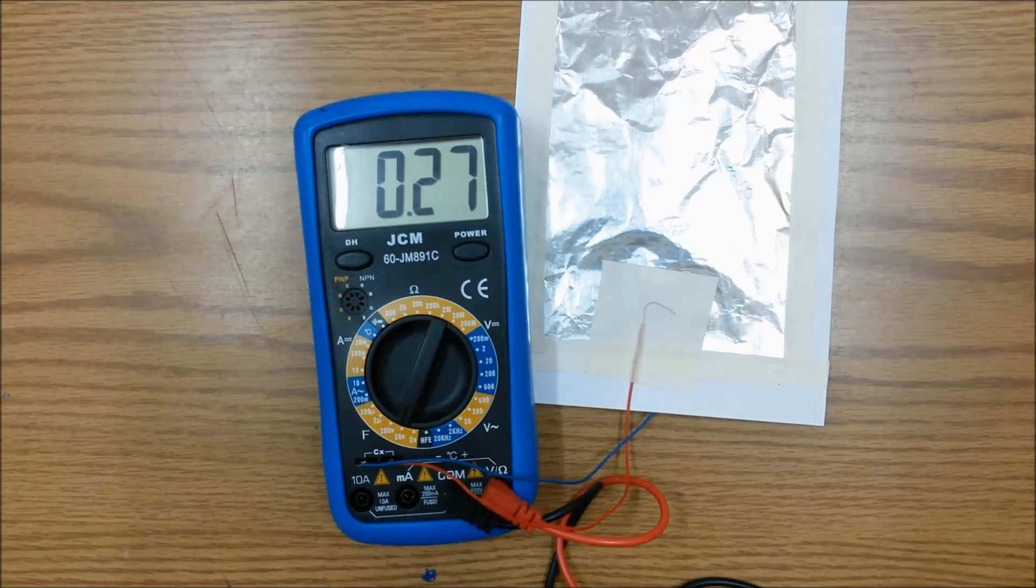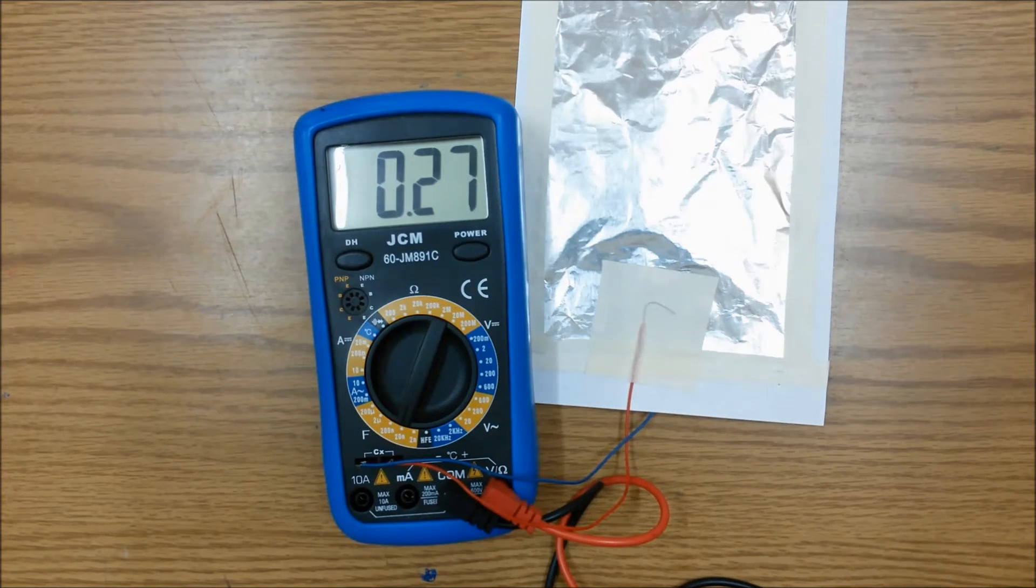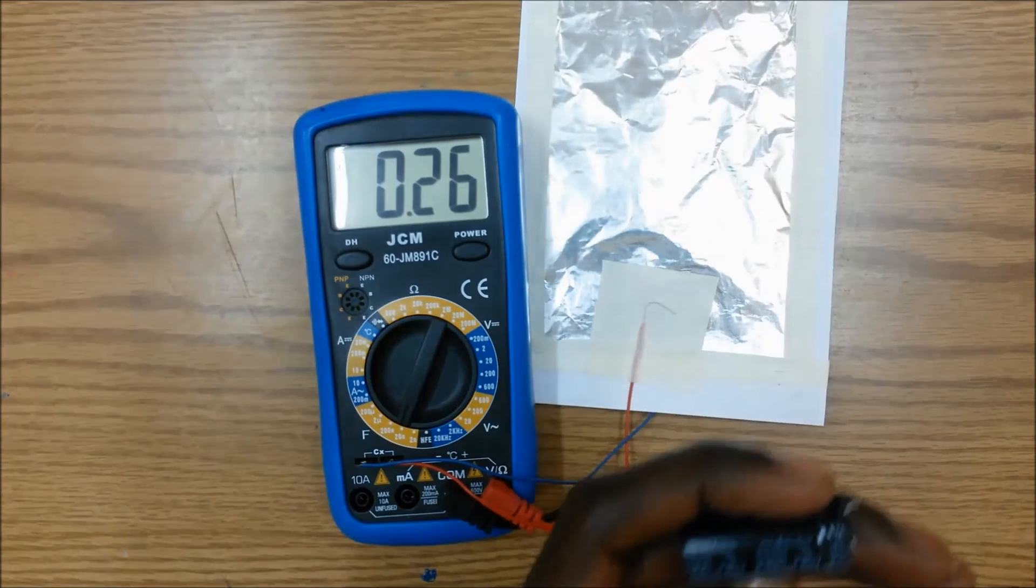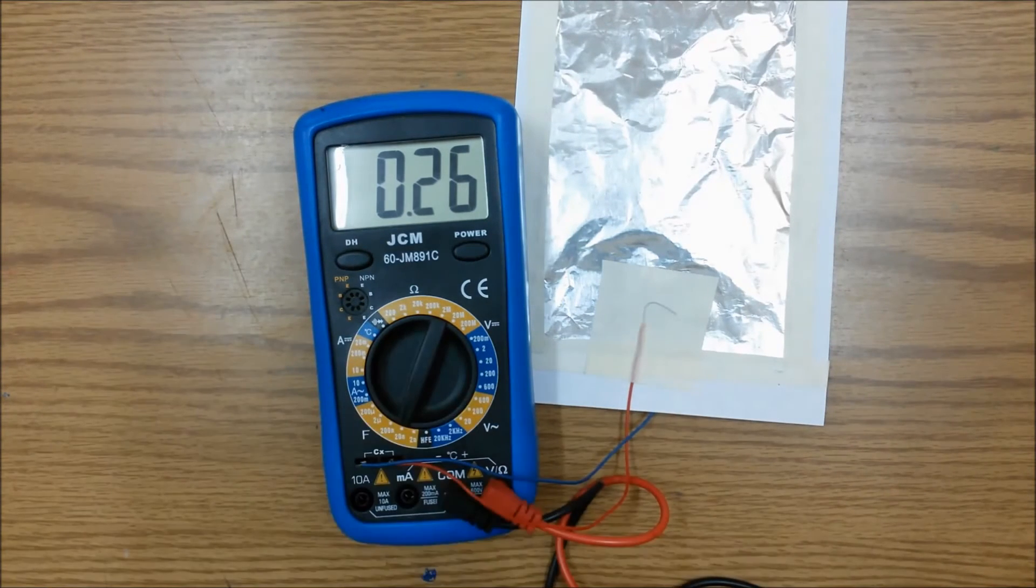So after inserting our connecting wires from the capacitor, we see we're getting a capacitance of 0.27 nanofarads or 27 picofarads. Not anything to get totally excited about when we compare it to a monster of a capacitor which is 3300 microfarads.